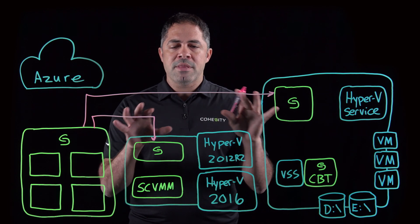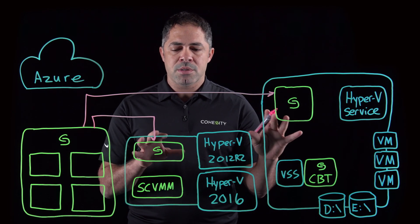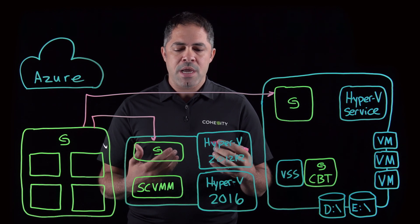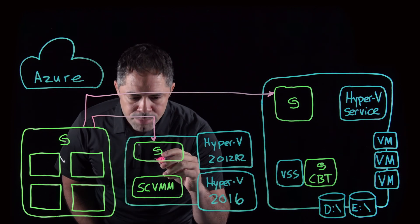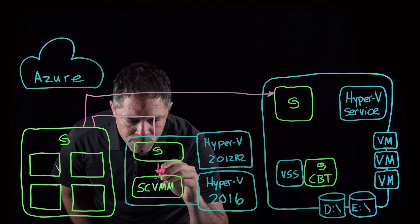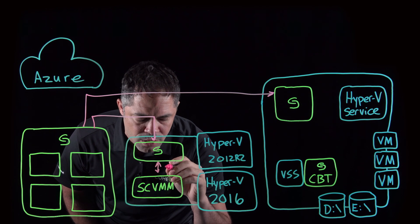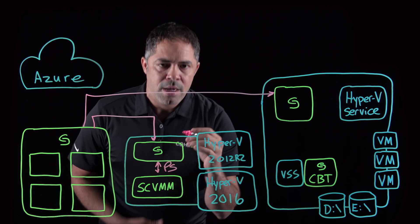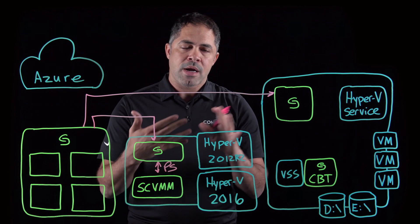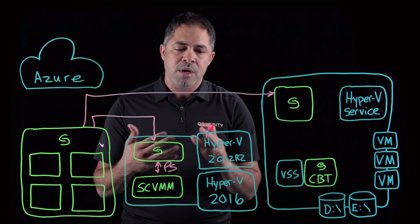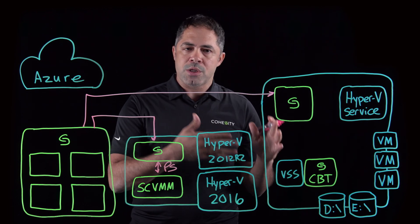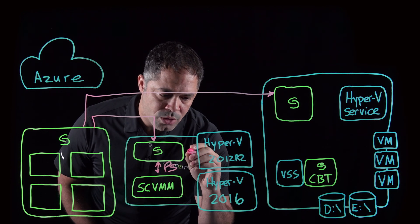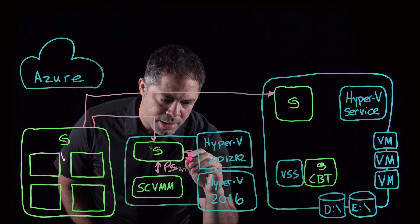By having that level of connectivity with those subsystems, whenever we need to instantiate a job or task involving communication between our helper and System Center, we use PowerShell APIs. Anything that goes directly to Hyper-V, regardless of the version — whether it be 2012 R2 or 2016 — happens via native WMI.